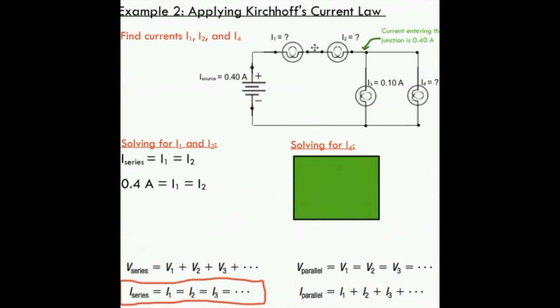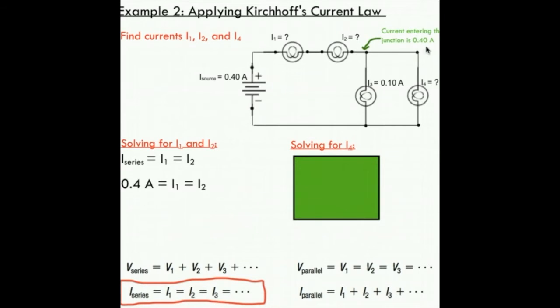Picture a highway. This is like a really busy highway, and we've opened two different lanes to free up the traffic here. Within these two lanes, I've got toll booths. I get to this junction, 0.4 amperes. What Kirchhoff's current law tells us is that the current leaving this junction has to also be 0.4 amperes.